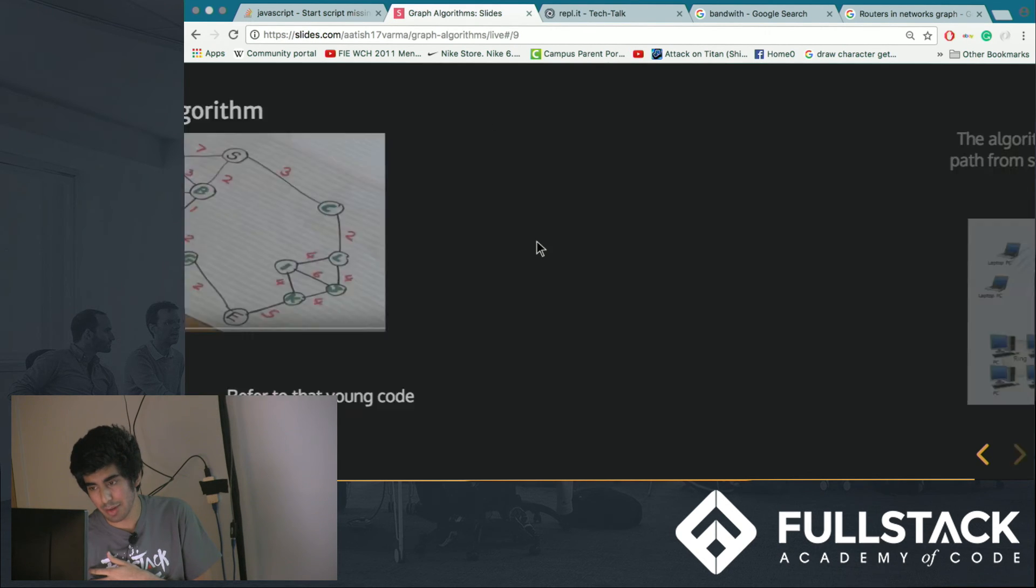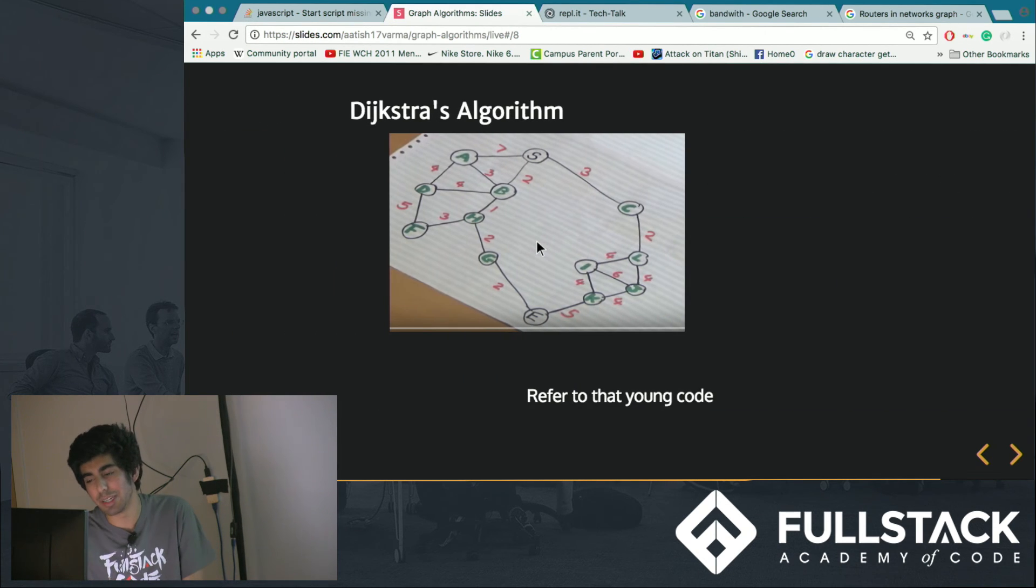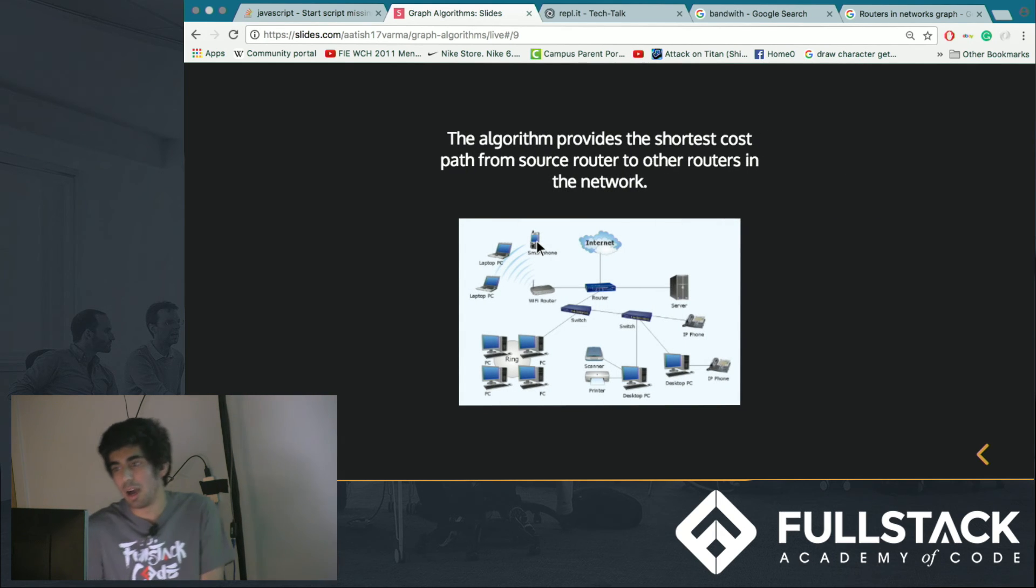So an application of Dijkstra's algorithm is in routers. Because companies always want to find the path between two routers that's the shortest because it costs them the least amount of money. And they don't want to go through many other nodes or other routers to get to the shortest path. So they use Dijkstra's algorithm to find the shortest path between two routers.